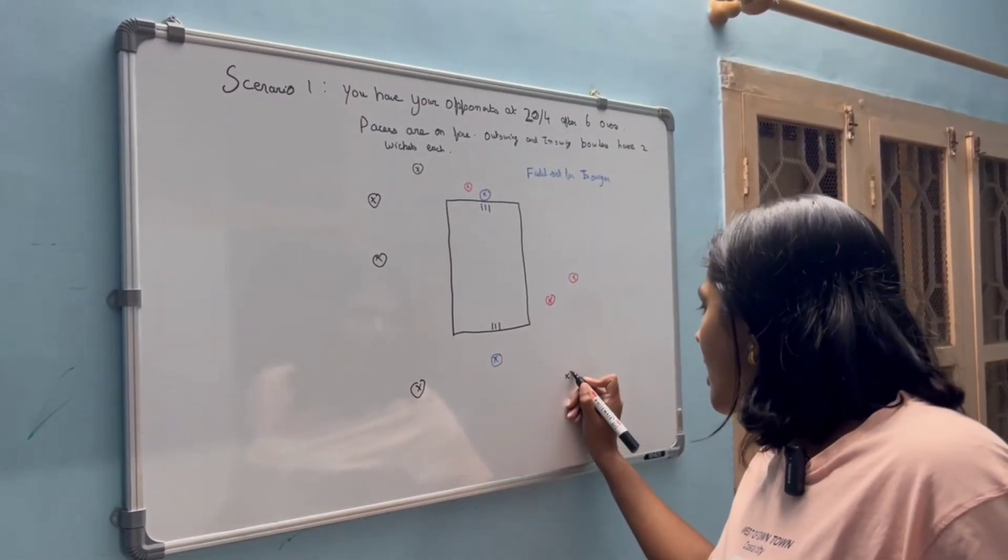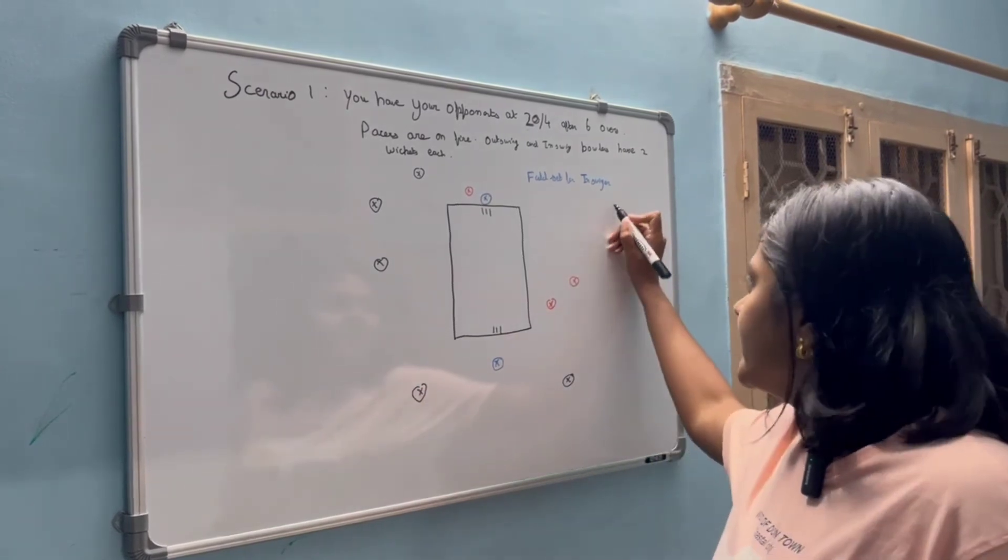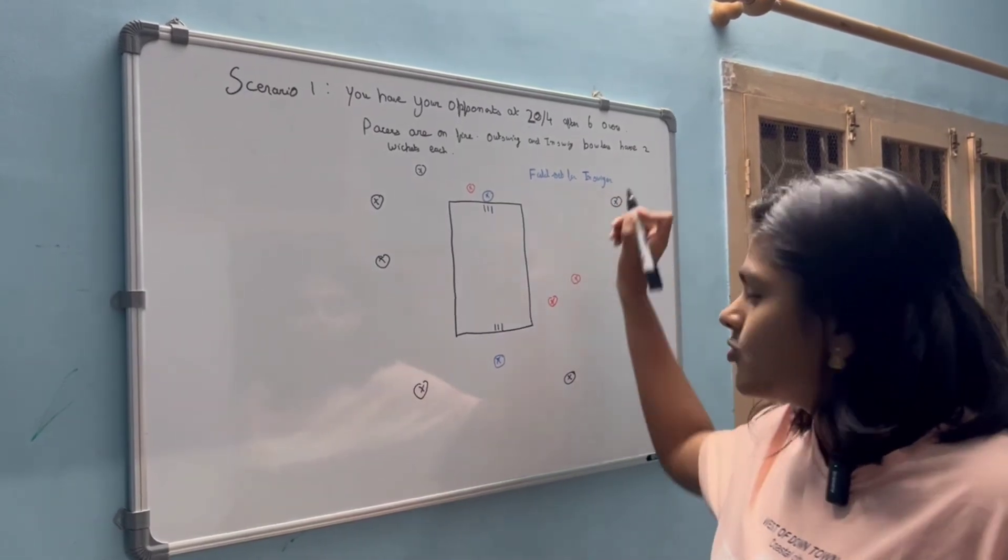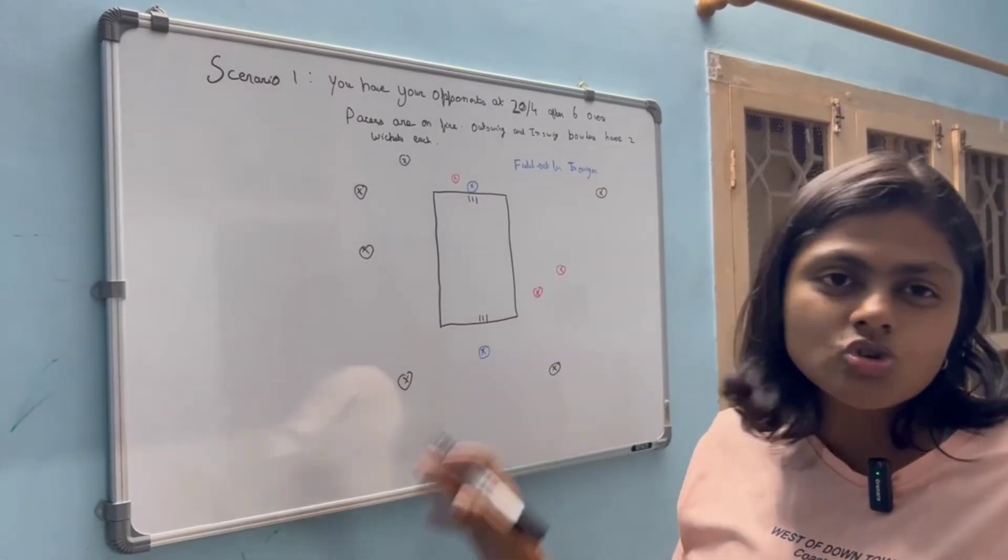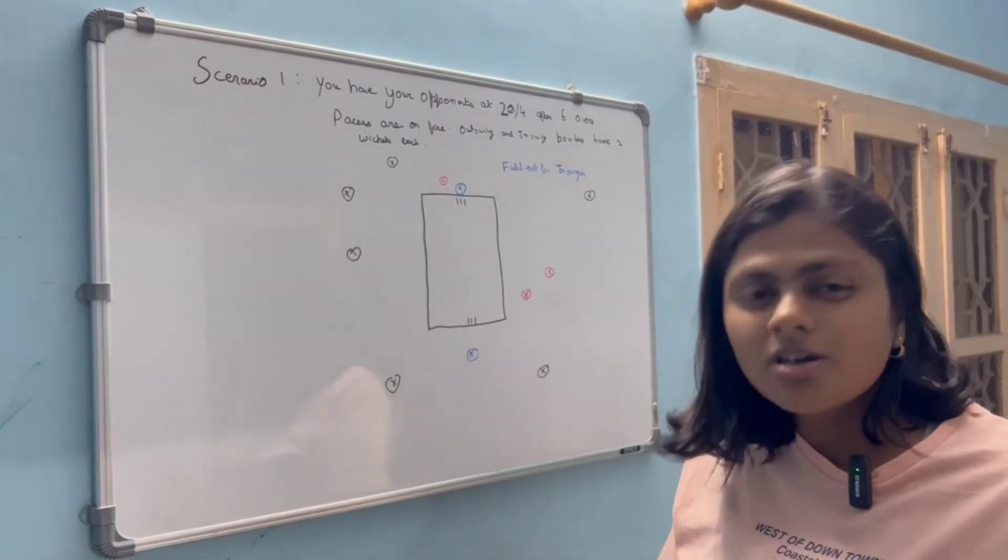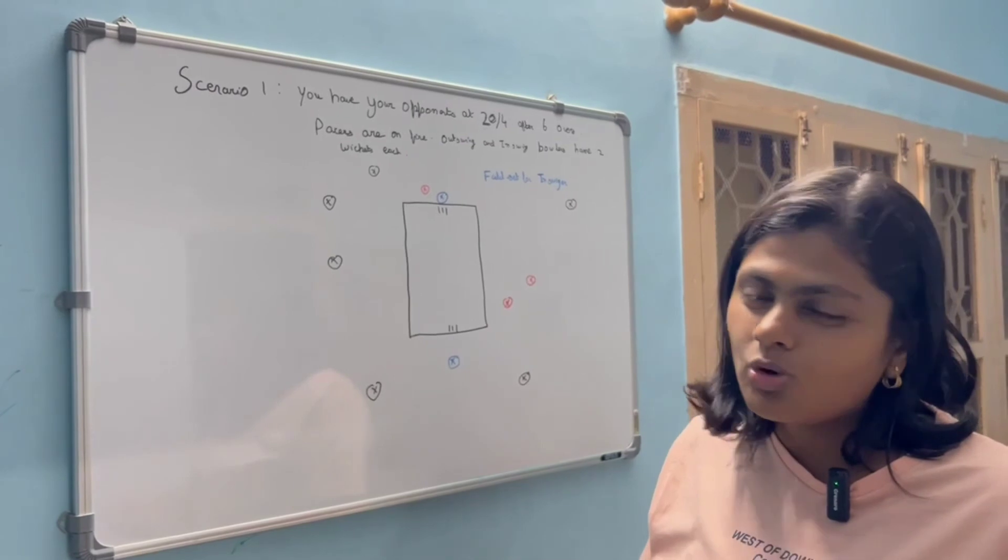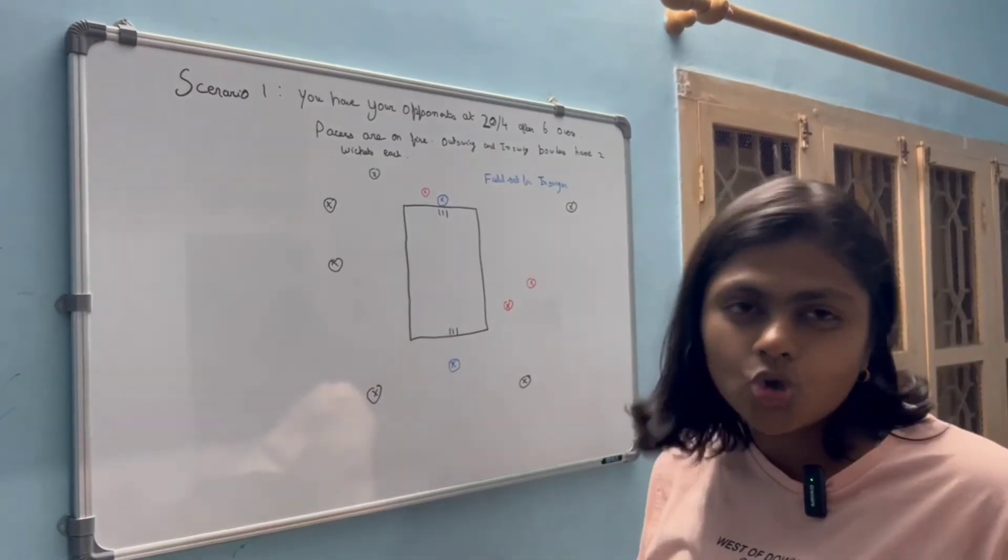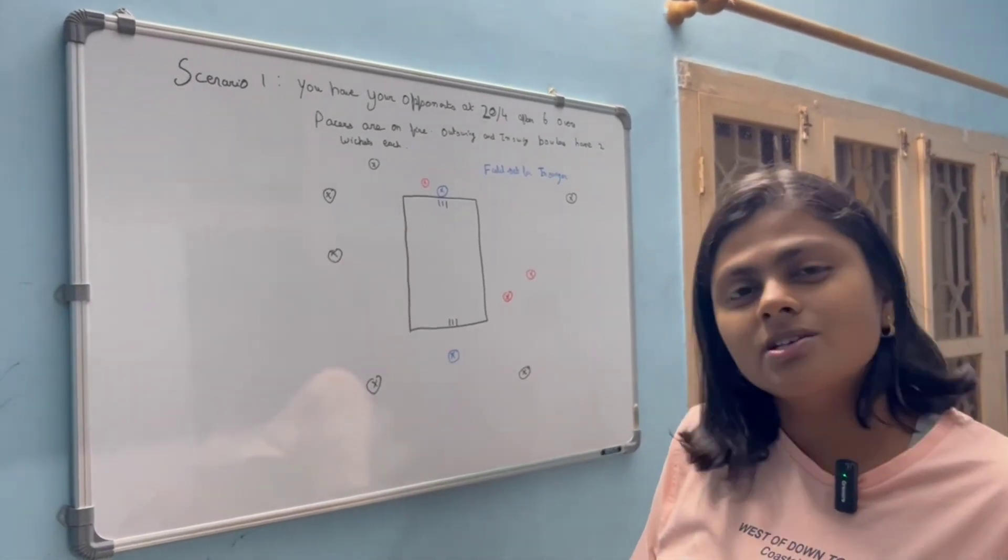So it now leaves me with two fielders. I will definitely have a mid-on fielder and then a deep backwards square leg because the ball is naturally moving into the right-hander. So this is the field position that I will have for my inswing bowler who has already picked up two wickets and the opponent side is four wickets down.